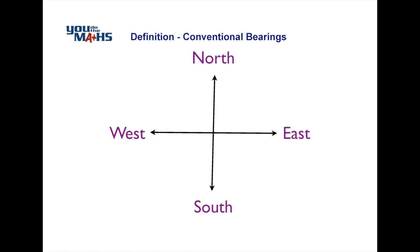Conventional bearings are based on the compass directions and we use these to assist us by placing point A at the center of these axes. So as before we can see we're heading off in direction B.